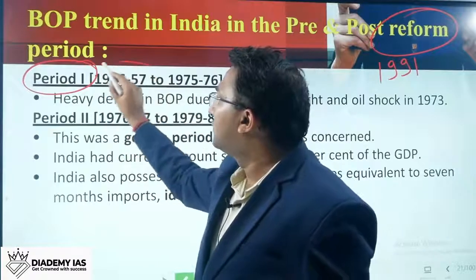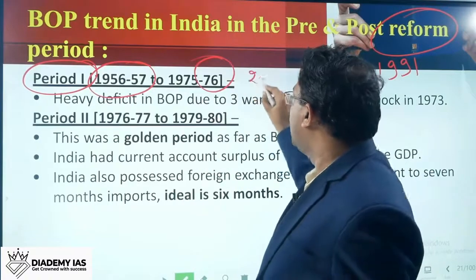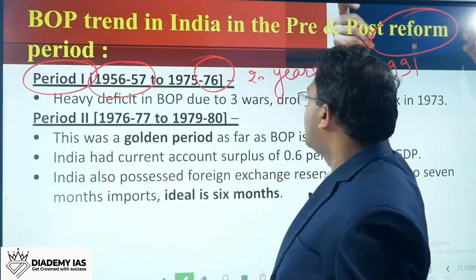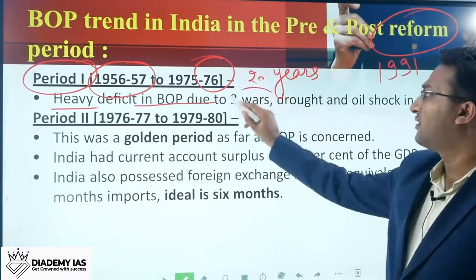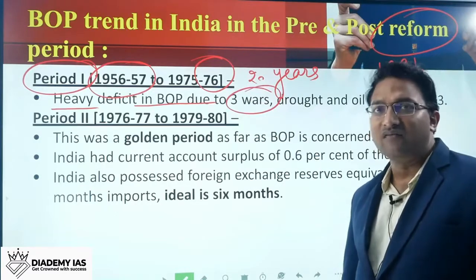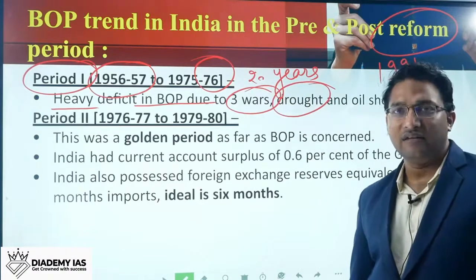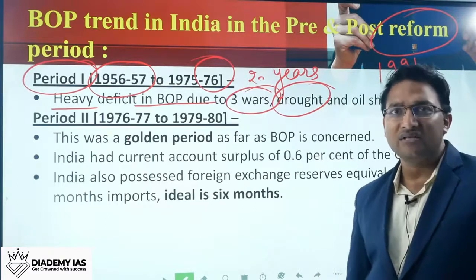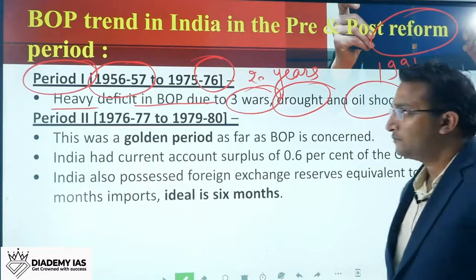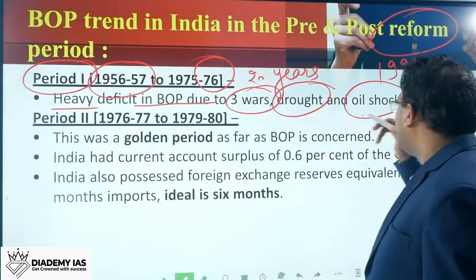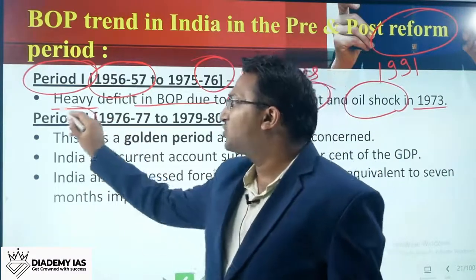Period one starts from the second Five Year Plan in 1956 till 1976. During this period of 20 years, India had a heavy amount of BOP deficit. The reasons were three wars — two with Pakistan and one with China — a drought situation around 1965, which led to the Green Revolution, and the oil shock in 1973. Because of wars, drought, and oil shock, India had a heavy BOP deficit.